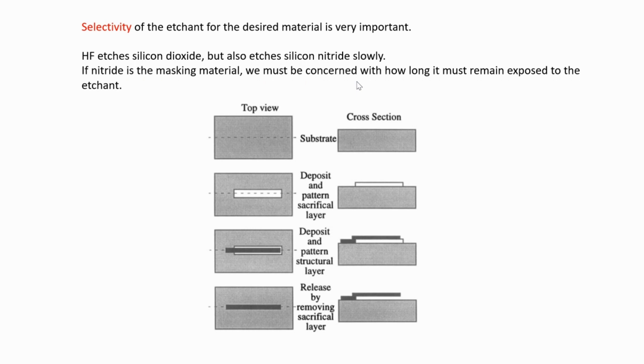This is a cantilever beam which we can make using isotropic etching. This is the top view and this is the cross section. I deposit a sacrificial layer, for example SiO2, then deposit the structural layer on top. Then I use HF to remove SiO2. By removing the sacrificial layer, I am releasing the device. This is called surface micromachining, where isotropic etching is used to remove the sacrificial layer and make the cantilever.